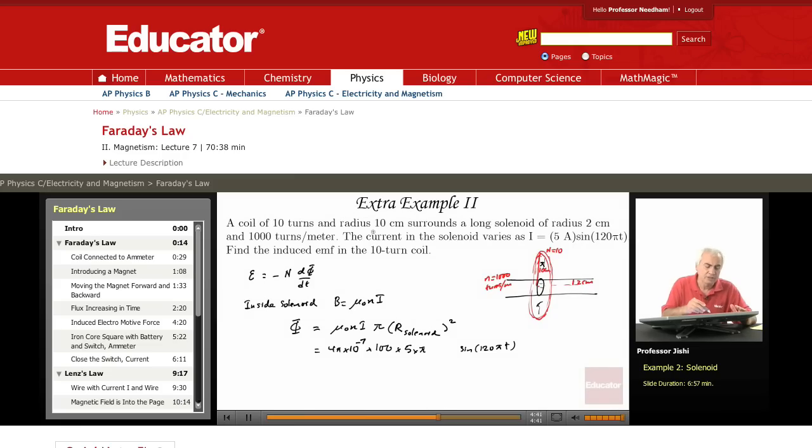And R of the solenoid, the radius of the solenoid is 2 centimeters, that's the radius. Squared, 2 squared is 4, but the centimeter is 10⁻² meter.